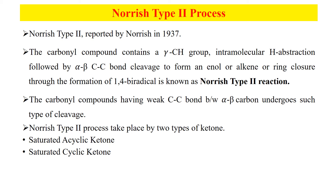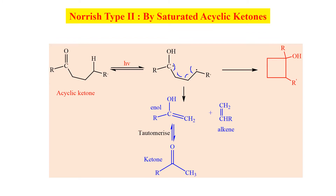It takes place by two types of ketones: saturated acyclic ketones and saturated cyclic ketones. Here is the first example of a Norrish type 2 reaction.